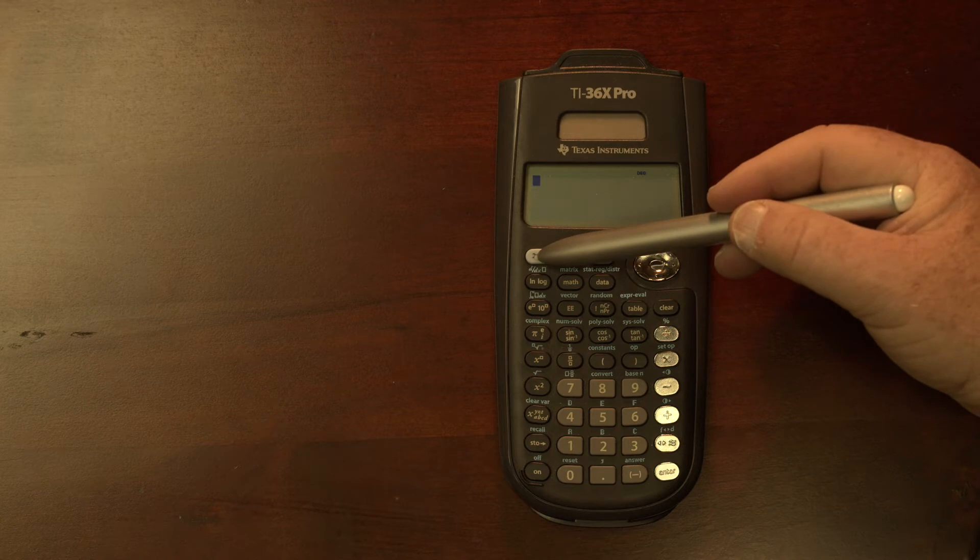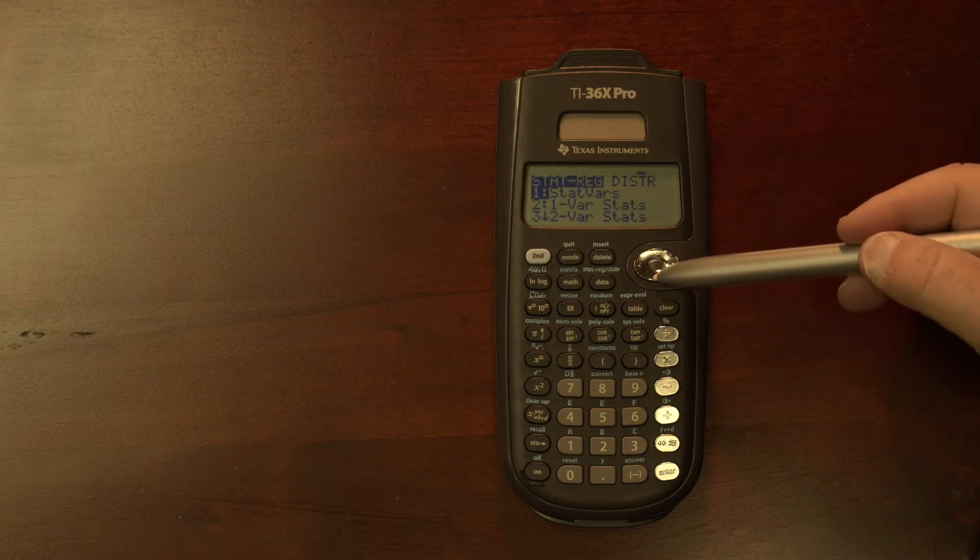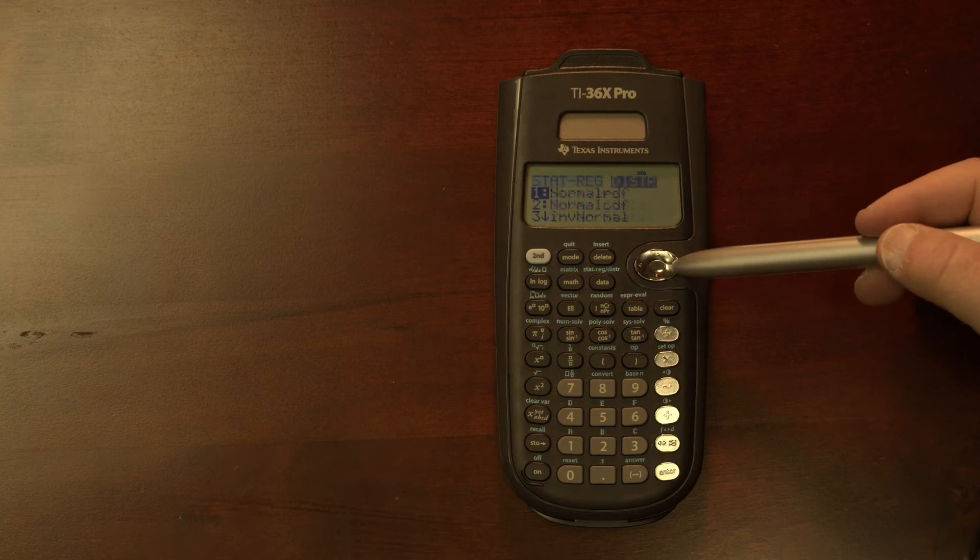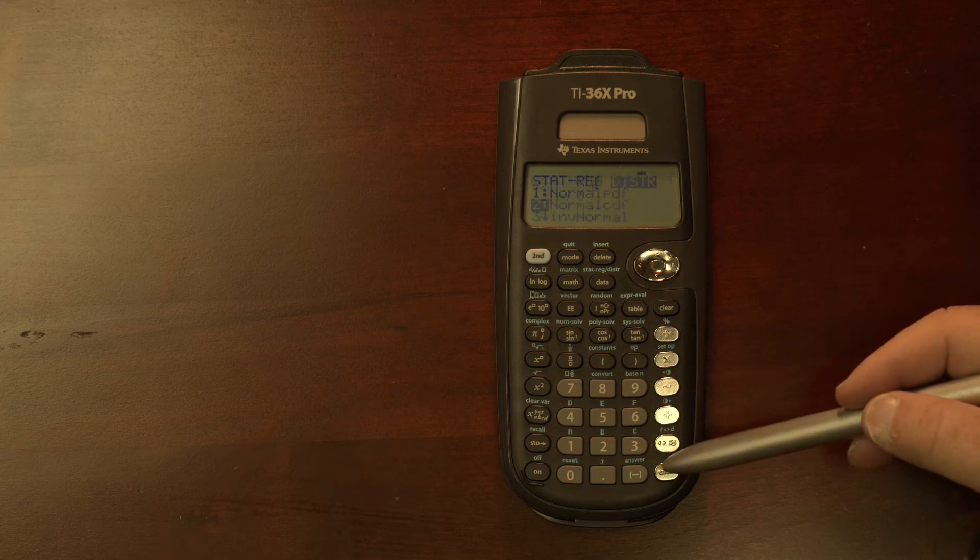In evaluating a distribution, we hit second, go over to data, which gets us into either statistics or distribution. We toggle over to the distribution item and then toggle down to our normal distributions where we are doing cumulative functions.